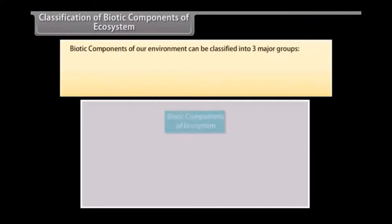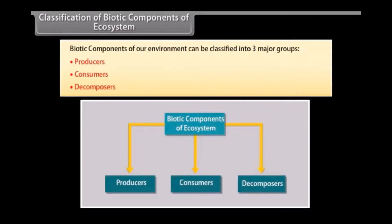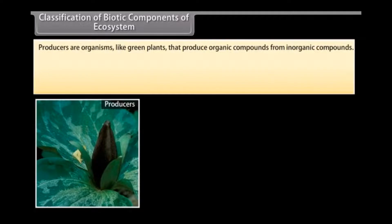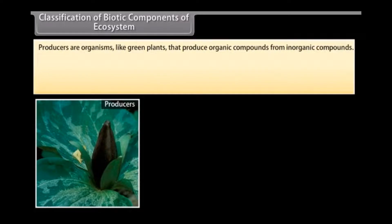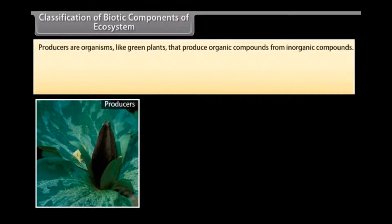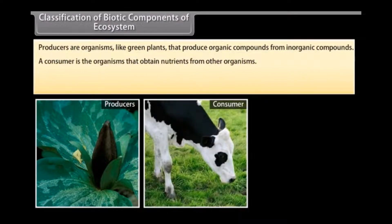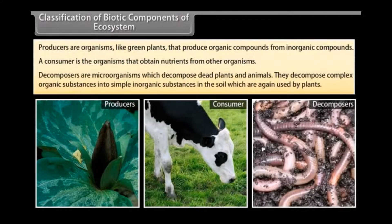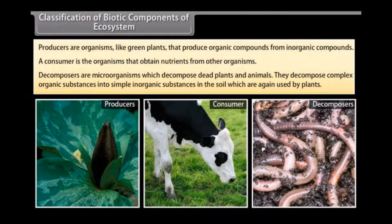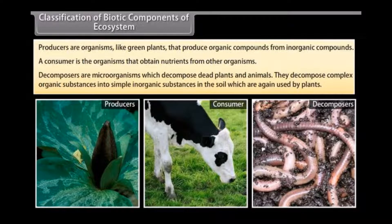Classification of biotic components of ecosystem. Biotic components of our environment can be classified into three major groups. They are producers, consumers, and decomposers. Producers are organisms like green plants that produce organic compounds from inorganic compounds. A consumer is the organism that obtains nutrients from other organisms. And the decomposers are microorganisms which decompose dead plants and animals. They decompose complex organic substances into simple inorganic substances in the soil which are again used by the plants.